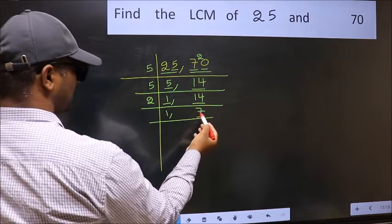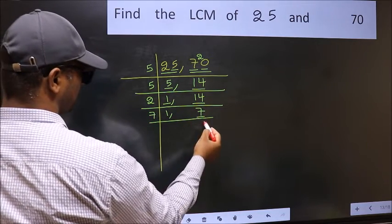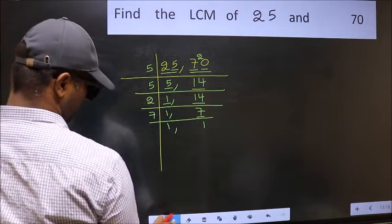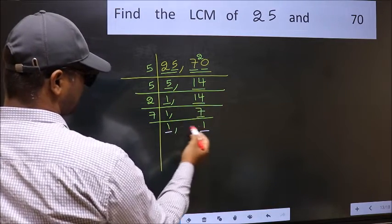Now here we have 7. 7 is a prime number, so 7 times 1 is 7. So we got 1 in both the places.